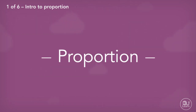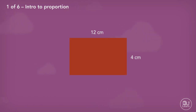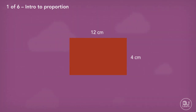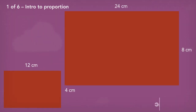We will start with proportion. Proportion, in my opinion, is better described visually, so here's a rectangle with dimensions 12cm and 4cm. Let's say I want to make the exact same shape but twice as big, like you're expanding an image on your phone or tablet. What would the new dimensions be? If the shape is twice as big, that means the dimensions are also twice as big. Therefore, the larger shape's dimensions are 24cm and 8cm.